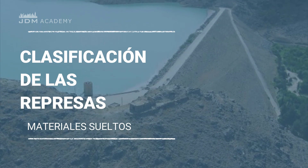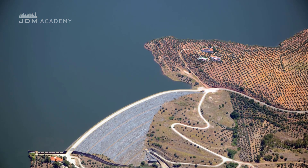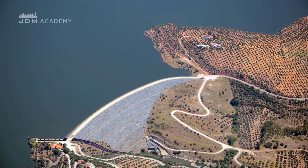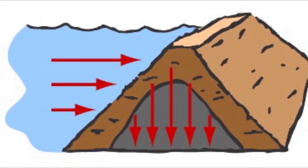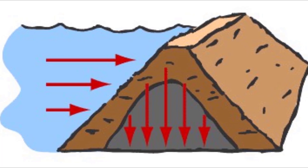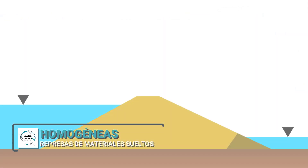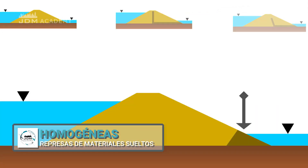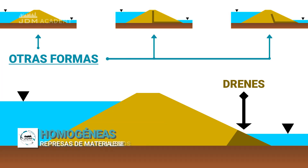Classification of loose-material dams. Within loose-material dams, depending on the arrangement of materials within the dam, several typologies can be distinguished. Represas homogéneas (Homogeneous dams) — constructed with a single material that must be both impermeable and resistant at the same time.